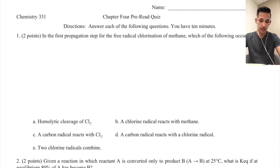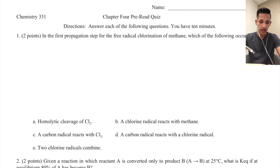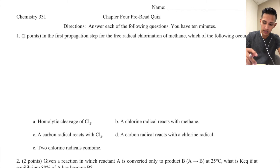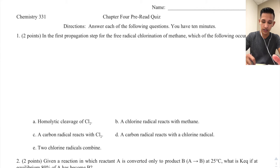We're going to be going over chapter 4 PQ of 2014. The very first question asks: in the first propagation step for the free radical chlorination of methane, which of the following occurs? The first thing to ask yourself is what does the chlorination of methane reaction look like.